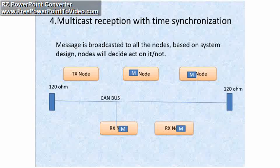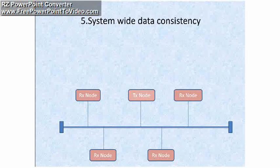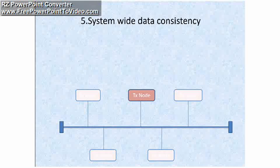Now the fifth property of the CAN protocol is system-wide data consistency. Here, the TX node transmits its message over the bus. Receivers check the message, and if they find that the transmitted message is corrupted, they will send an error frame.